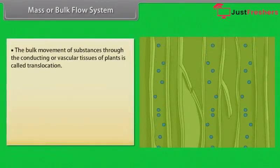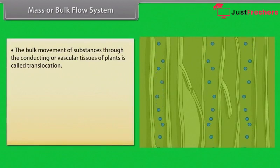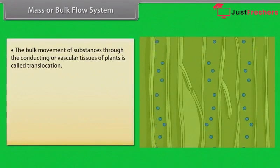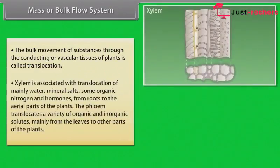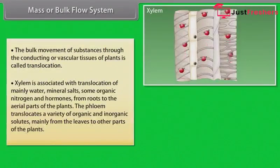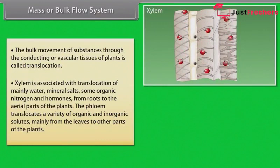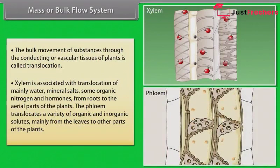The bulk movement of substances through the conducting or vascular tissues of plants is called translocation. Higher plants have highly specialized vascular tissues: xylem and phloem. Xylem is associated with translocation of mainly water, mineral salts, some organic nitrogen and hormones, from roots to the aerial parts of the plants. The phloem translocates a variety of organic and inorganic solutes, mainly from the leaves to other parts of the plants.